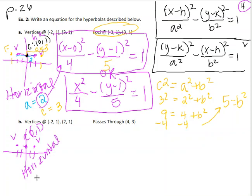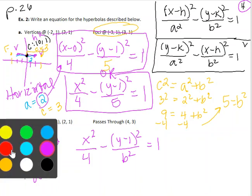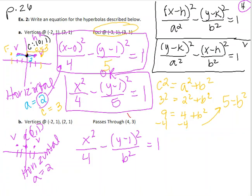And it told me the value of a. And so, where I was, x squared over 4 minus y minus 1 squared over, I don't know, b squared equals 1. And in this problem, it tells you it passes through the point 4, 3.